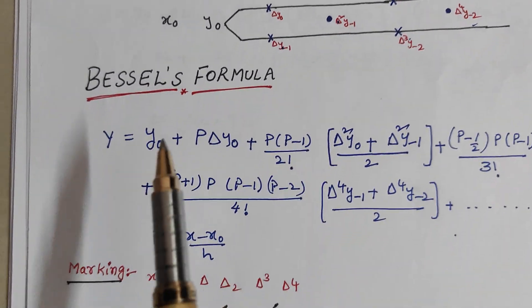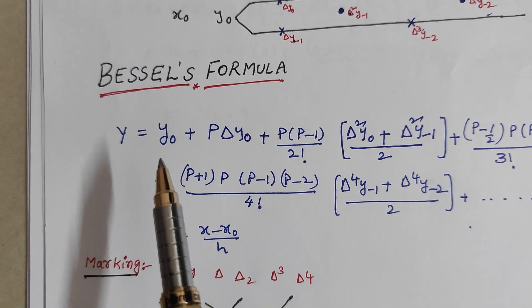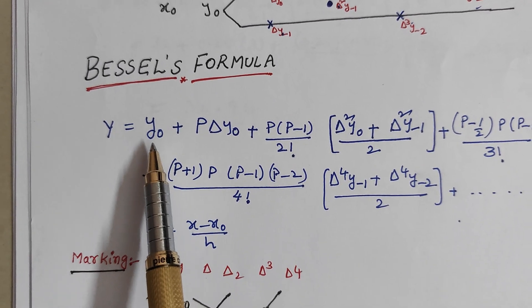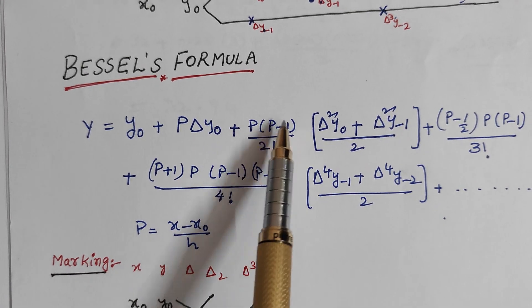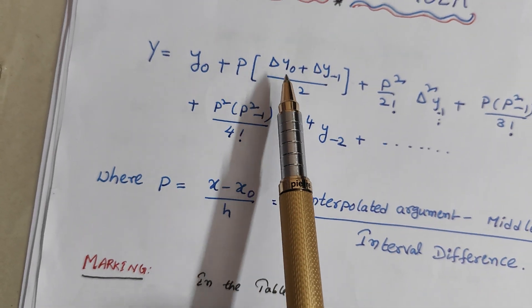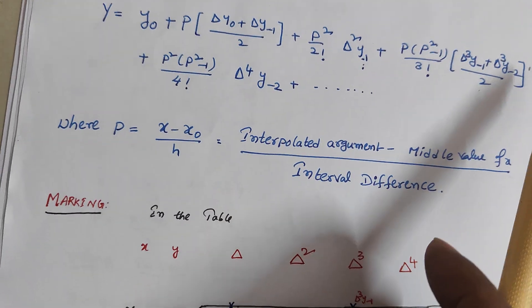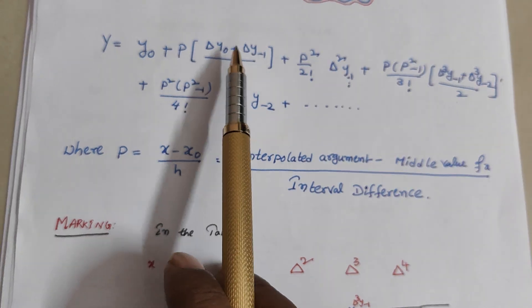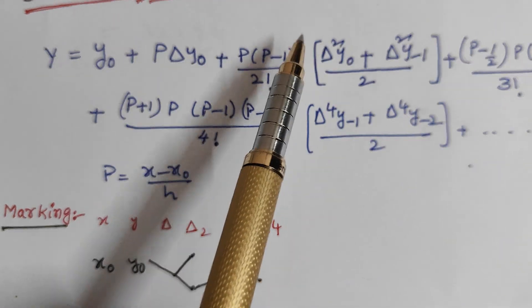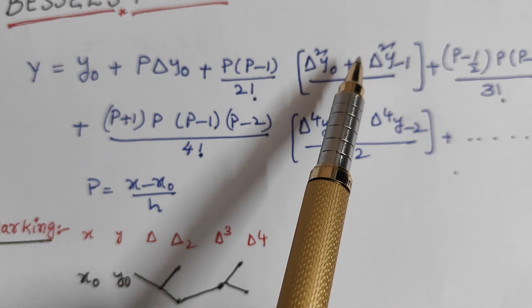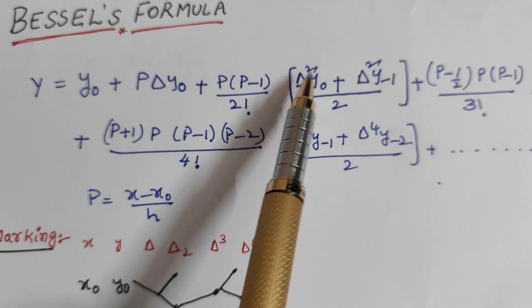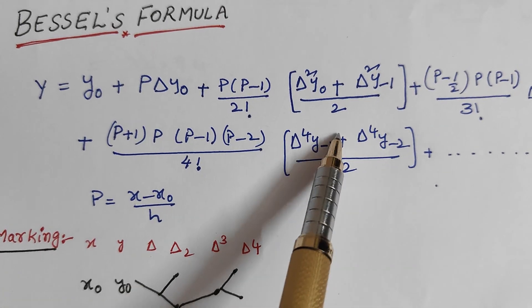Bessel's formula is similar to Newton forward formula. Starting with y0 plus p delta y0, then p into p minus 1 by 2 factorial. For Bessel's, we average the even powers — delta square terms — and the odd delta and delta cube terms remain. Even powers are averaged: delta square. So here p into delta y minus 1 and y0 terms appear.